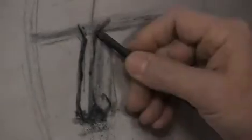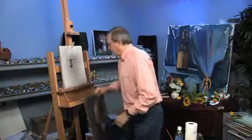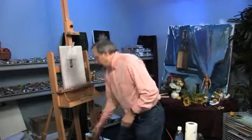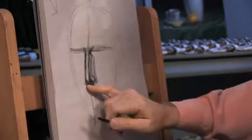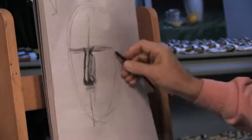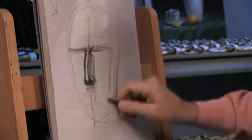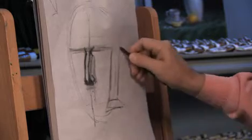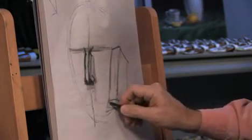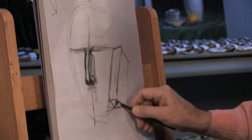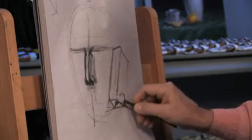We have to keep the nostril on the side plane, and here's another example of that — you see it falls right on the side. We have to keep that simple. There's also an under plane, so we have a front plane, side plane, and under plane, and that's where the nostril goes. Breaking that down a little larger: front, side, under plane.